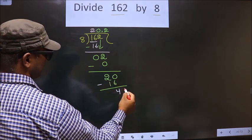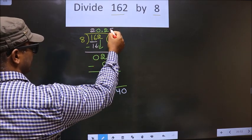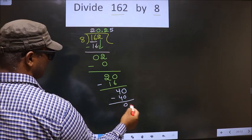4 is smaller than 8. You take 0, making 40. When do we get 40 in 8 table? 8 times 5 is 40. You subtract. You get 0.